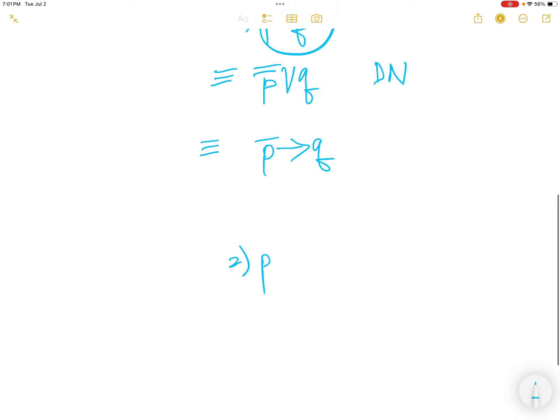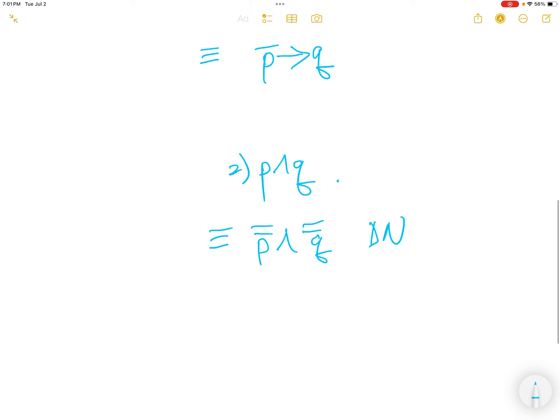Part two is p and q. It's equivalent to NOT NOT p and NOT q, double negation. This is equivalent to, pull out the one NOT out, you get NOT p or NOT q, DeMorgan's.